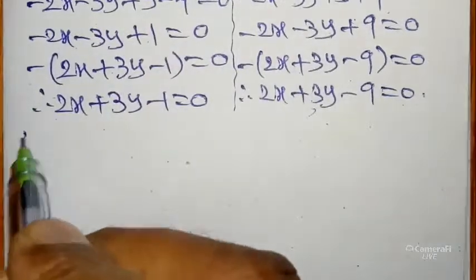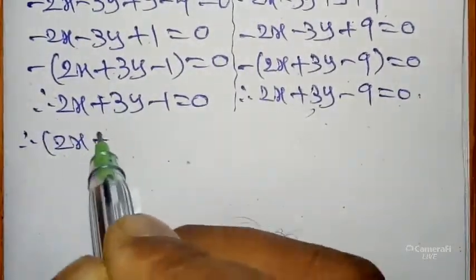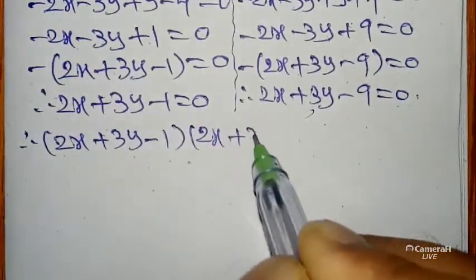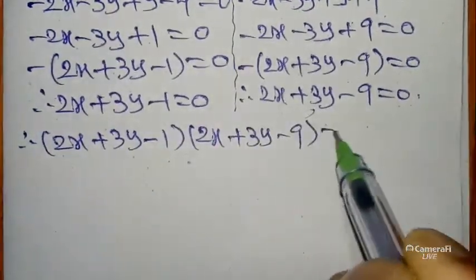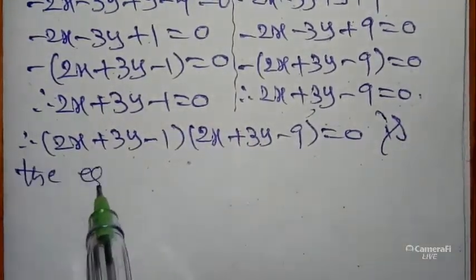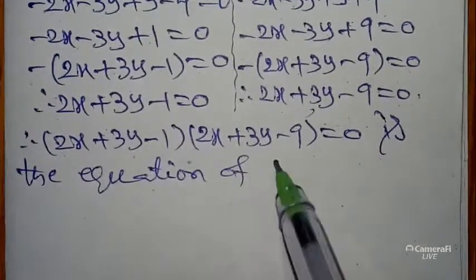To get the answer, you can multiply these two values. So we get (2x + 3y - 1)(2x + 3y - 9) = 0 is the equation of the locus.